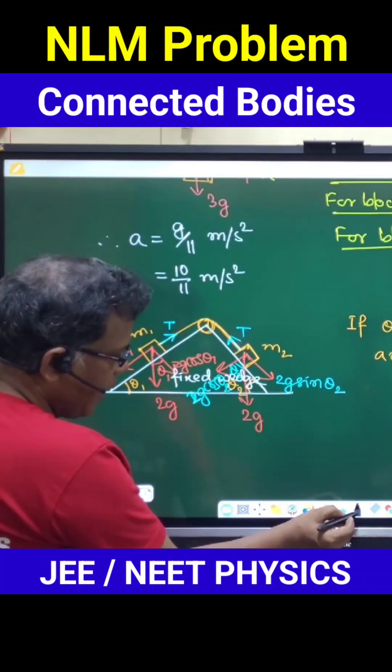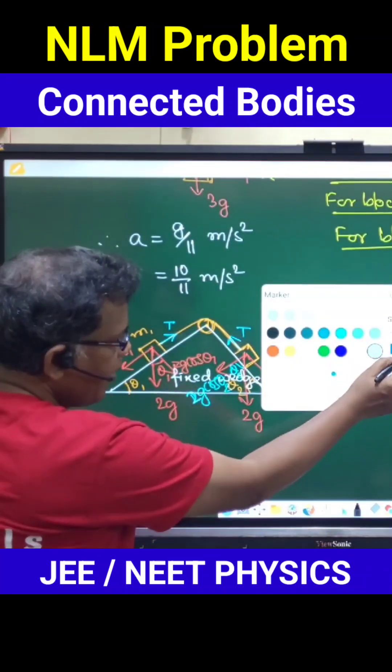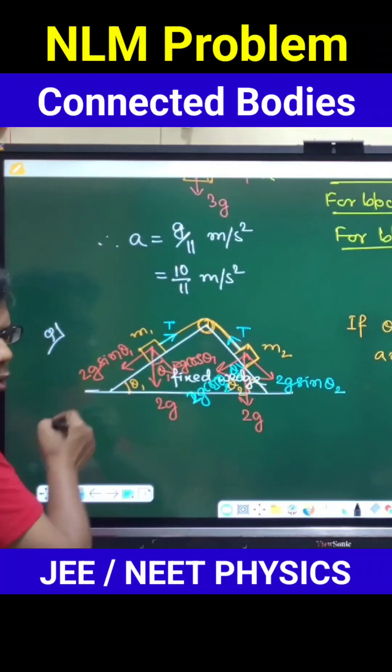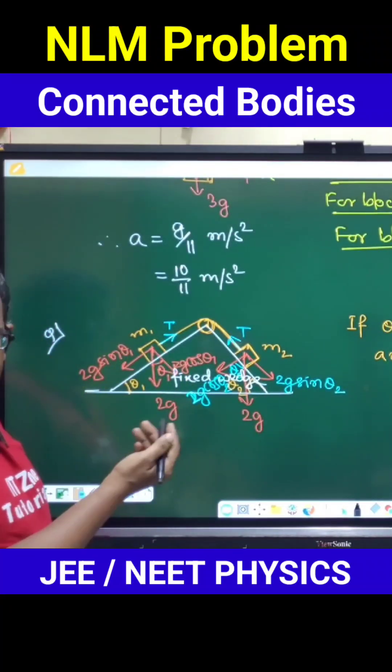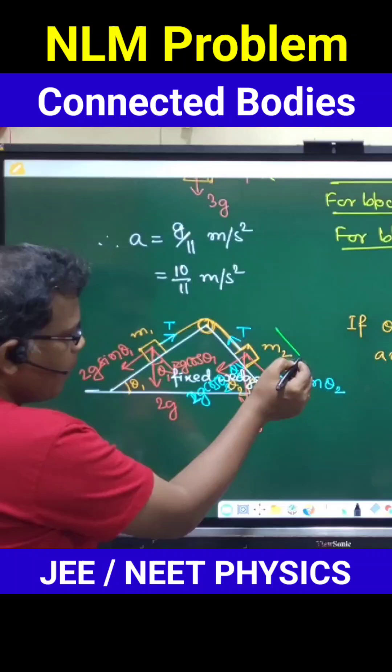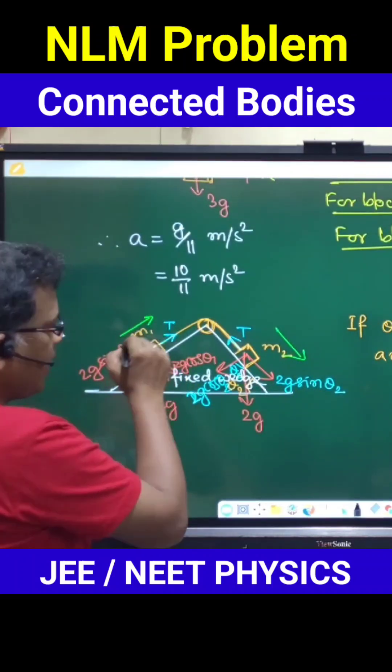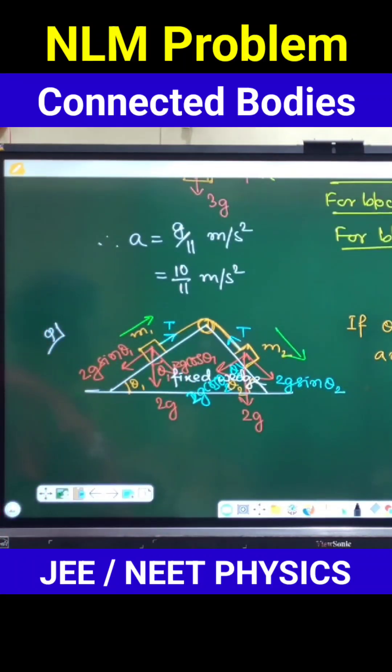So that means it is now clear from this data that the one which is experiencing greater downward force along the inclined plane, that is tend to move downward. So obviously that means this one will move downward, and being connected with this, this one will go upward.